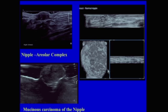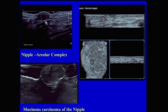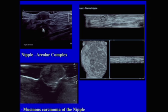The nipple-areolar complex can be difficult to see with ultrasound unless certain maneuvers are used. For example, this is a normal nipple-areolar complex seen well because abundant gel was placed between the nipple and the transducer. The nipple is seen as a hypoechoic circumscribed mass and the skin layers are well seen as two echogenic layers separated by a hypoechoic area. Using this technique, you can see the area behind the nipple very well. Without gel or an offset pad, the nipple can cause posterior acoustic shadowing, obliterating visualization posterior to the nipple.